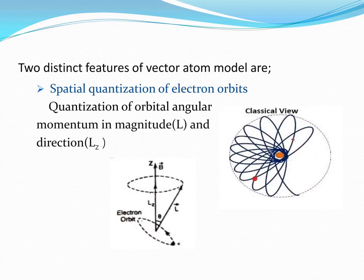We have two different features: spatial quantization and spin quantization. Quantization means that for physical quantities, only discrete values are allowed. For example, the energy of electrons in various orbits is quantized. In classical view, the electron can revolve around the nucleus in all possible orientations in an elliptical orbit.